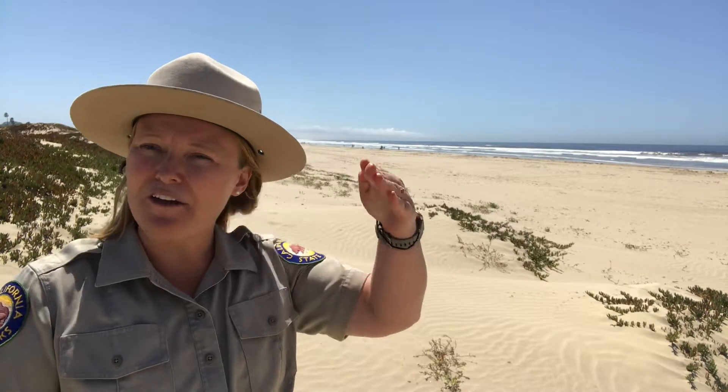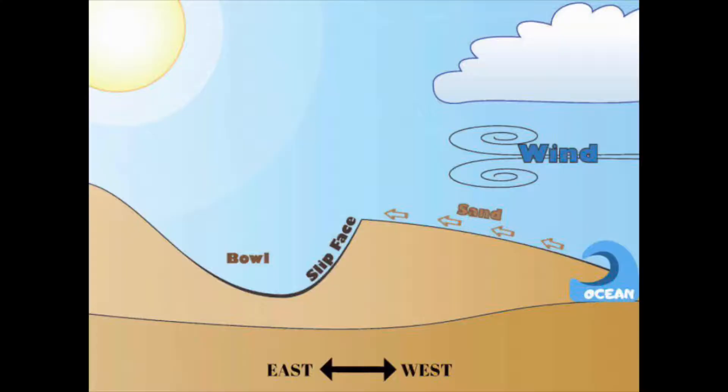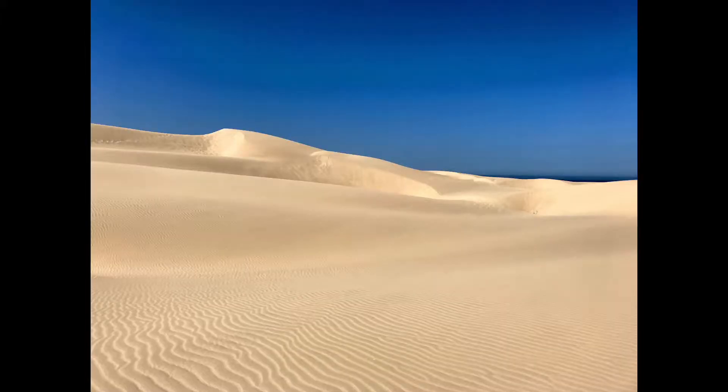We're going to talk about how the shape of the coastline actually helps contribute to what ends up on our beaches. Because of the shape of this coastline we get a lot of wind, and this wind combined with swells and surf wash that sand up onto the near shoreline. The wind continues to blow and blows it up into these pristine sand dunes that you see out here behind me today.